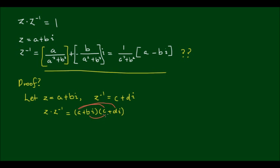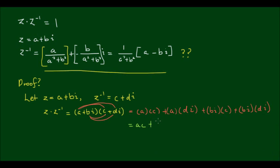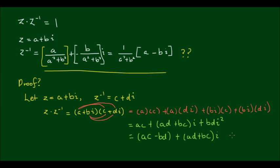If we distribute this out, we get ac plus adi plus bci plus bdi squared. And then if I simplify this, I get ac plus ad plus bc times i, plus bd times i squared. And now i squared is equal to negative 1, so this further simplifies to ac minus bd as the real component, and then plus ad plus bc times i as the imaginary component.